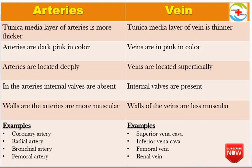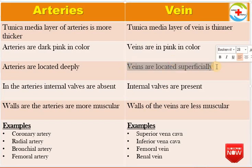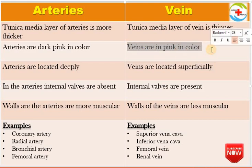Arteries are located very deep in the body and are a dark pink or red color. Veins are very superficial, close to our skin, and appear bluish, greenish, or colorless. Arteries are dark red or pink in color.